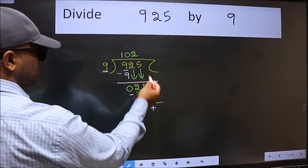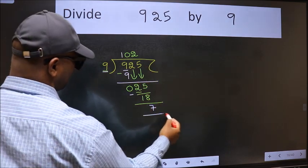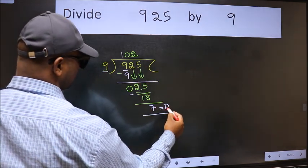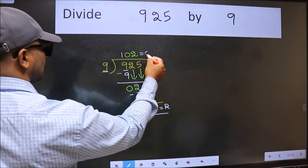No more numbers to bring it down. So we stop here. This is our remainder and this is our quotient.